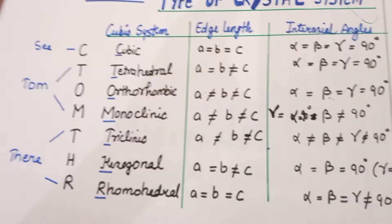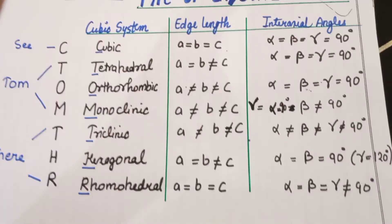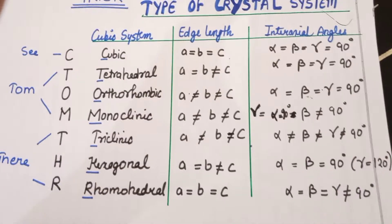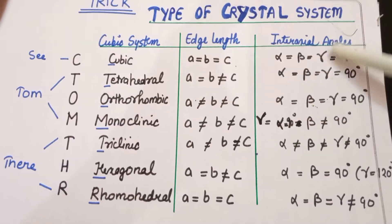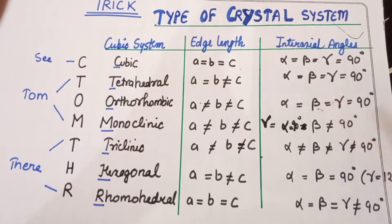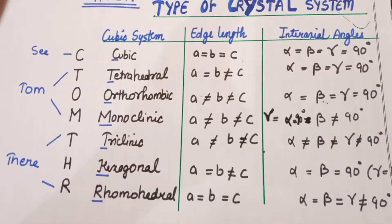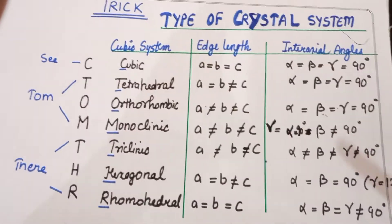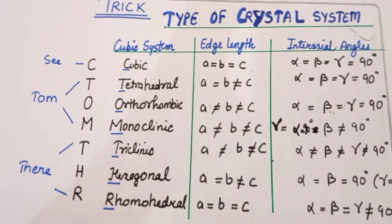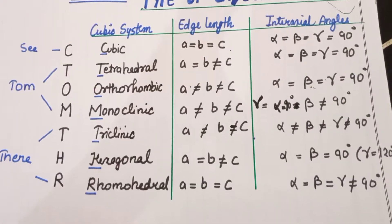Let's move to interaxial angles. If we remember interaxial angles, the starting order is the same: Alpha equal to Beta equal to Gamma equal to 90 degrees. Three systems are the same — Cubic, Tetrahedral, and Orthorhombic.